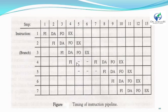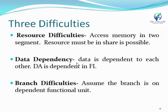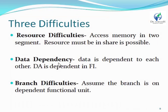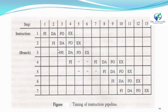We can show that the difficulty — resource, data difficulty — we can observe that resource dependency will always be occupied. Data dependence means the result will be dependent on each other. If any system encounters this difficulty, then the process will start at step number 7.